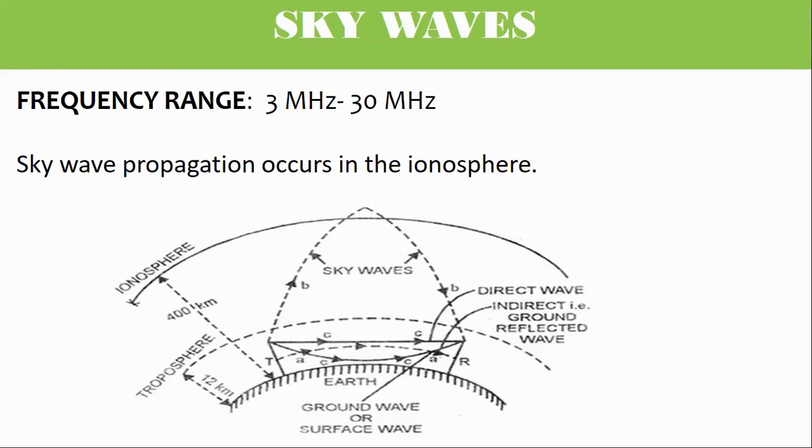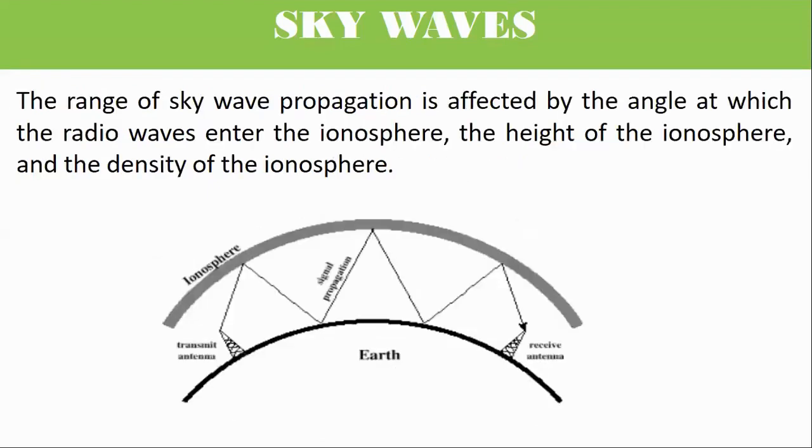These ions provide a reflecting medium to the radio or communication waves within a particular frequency range. The range of sky wave propagation is affected by the angle at which the radio waves enter the ionosphere, the height of the ionosphere, and the density of the ionosphere.